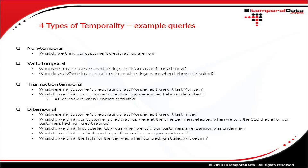Here are some example queries we could answer based on which type of temporality our data structures support. With non-temporal data, we can answer: 'What do we think our customers' credit ratings are right now?' — just a simple table with a customer ID key and a credit rating attribute. With valid temporal data, we could answer: 'What were my customers' credit ratings last Monday as I know it now?' or 'What do we think our customers' credit ratings were when Lehman defaulted, right now?'